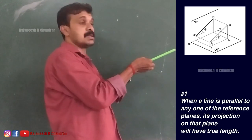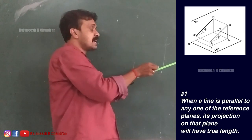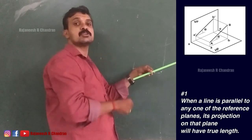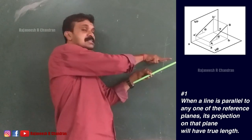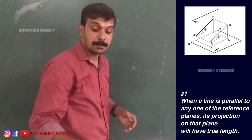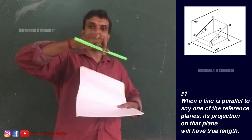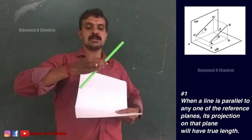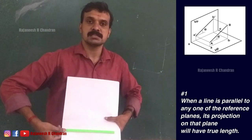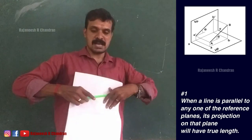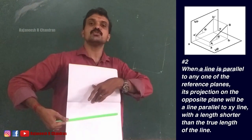Now, in the same position where the line is parallel to VP, when you observe from the top you can see two equal distances on either side, since the line is parallel to VP. This means in the top view, this endpoint projects to HP and that endpoint projects to HP, and since those distances are equal, the top view of this line will be a line parallel to the XY line.